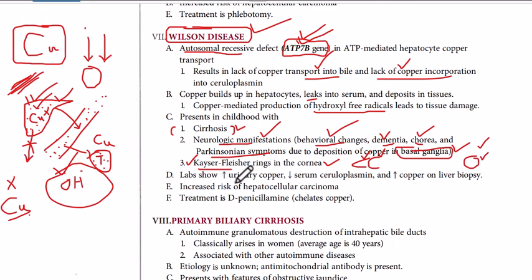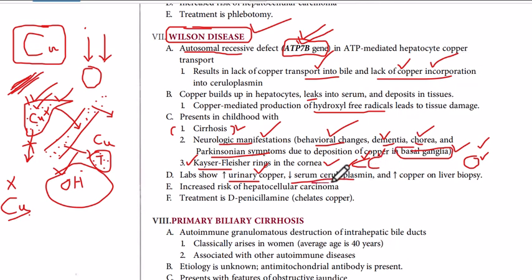In the labs, we will have increased urinary copper because of excess copper in the blood. We will have decreased ceruloplasmin because copper cannot be incorporated into apoceruloplasmin to form ceruloplasmin — ceruloplasmin is the combination of apoceruloplasmin and copper. We will also have increased copper on liver biopsy, which can show liver cirrhosis.